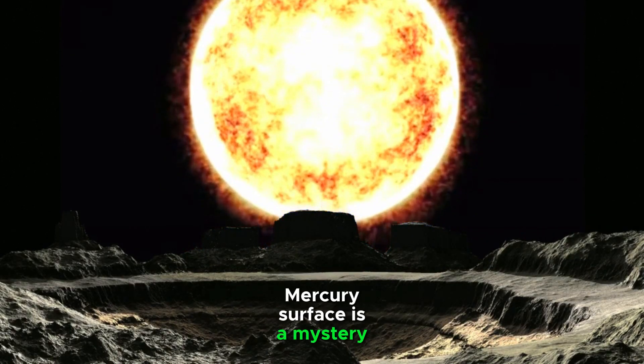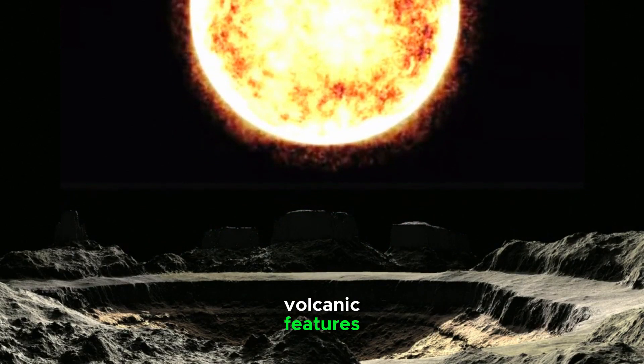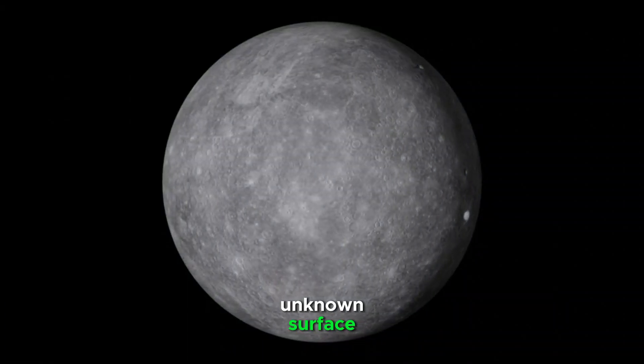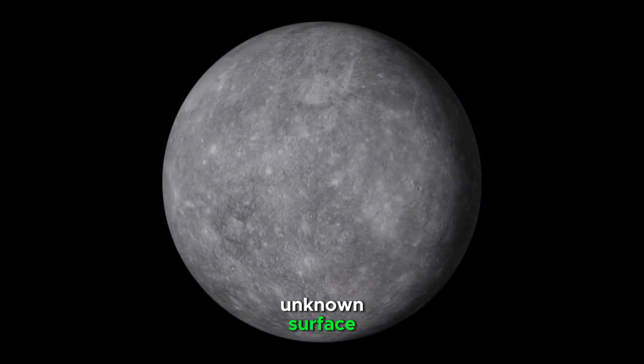Unforeseen Dangers. Mercury's surface is a mystery. It's covered in craters and volcanic features, and we don't fully understand the terrain or potential hazards. Landing a spacecraft on such an unknown surface could be risky.